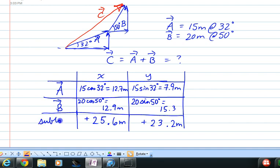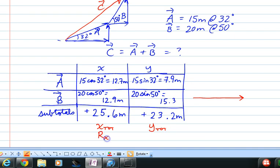Remember these are what we call the subtotals. And now we construct a new right triangle with these subtotals. And we could even call this x total and y total, or we could call it rx and ry for the resultant. So rx is 25.6 and ry is almost as much, 23.2.